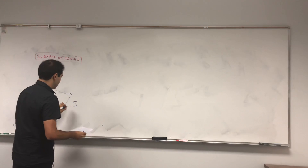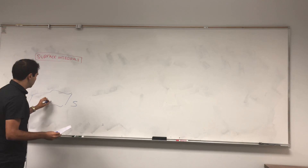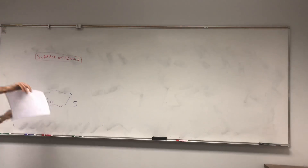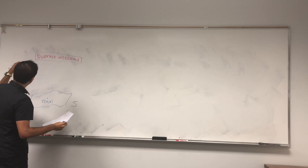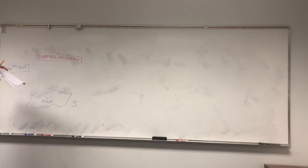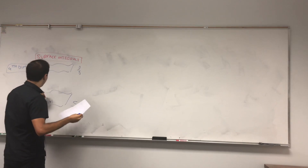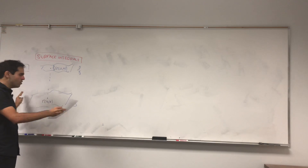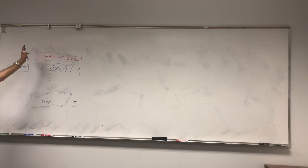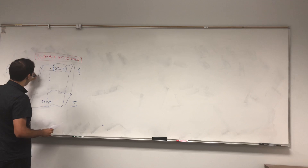Suppose you have a surface S that lies in three-space, and it can be parametrized with R(U, V). Think of the surface as being Earth, like you're walking on Earth. And suppose you have, in the fourth dimension — so it's very important, this is not in R3, it's sort of in R4 — you have a function F lying above this. This is maybe F of R(U, V). So suppose you're walking on Earth and above you there's a cloud or something. What you want to do is calculate the volume above S and under F.